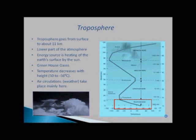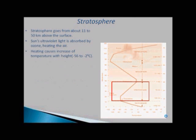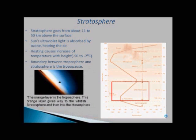The second region of atmosphere is stratosphere. Stratosphere goes from about 11 to 50 kilometers above the surface. Sun's ultraviolet light is absorbed by ozone. And due to which temperature increases from minus 56 to minus 2 degrees centigrade. The boundary between troposphere and stratosphere is the tropopause.